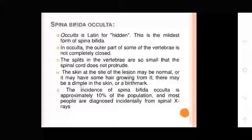The skin at the site of the lesion may be normal or may have some growth from it. There may be a nipple, skin discoloration, or birthmark. The incidence of Spina Bifida Occulta is approximately 10% of the population. Most people are diagnosed or identified through spinal X-rays.